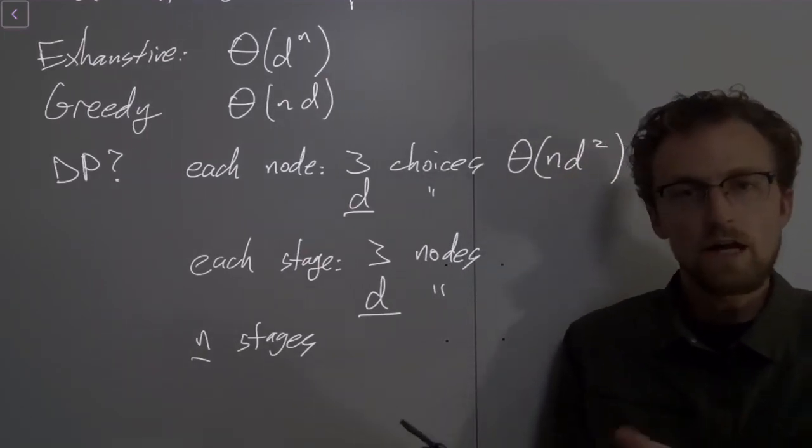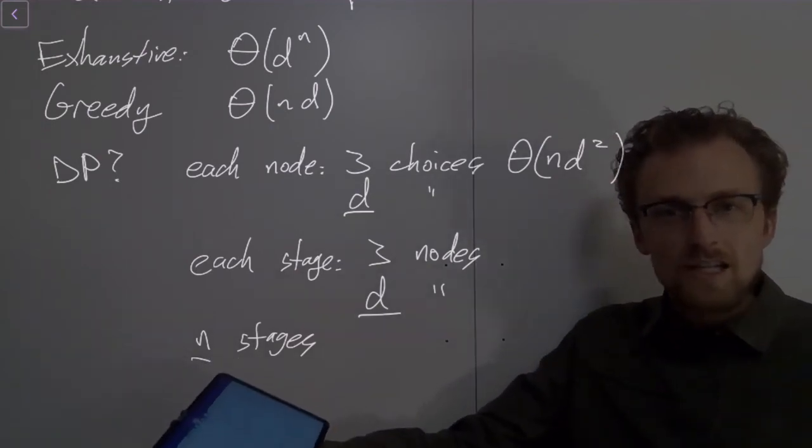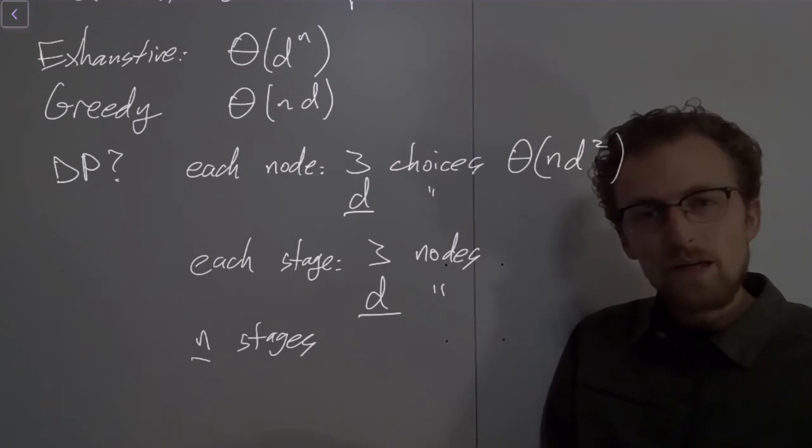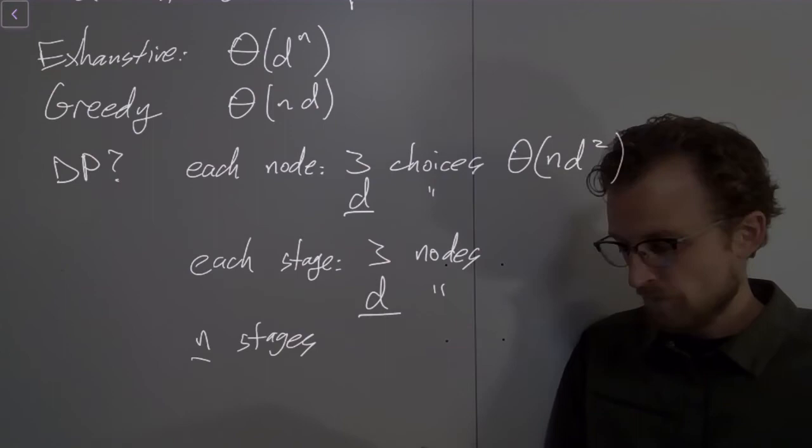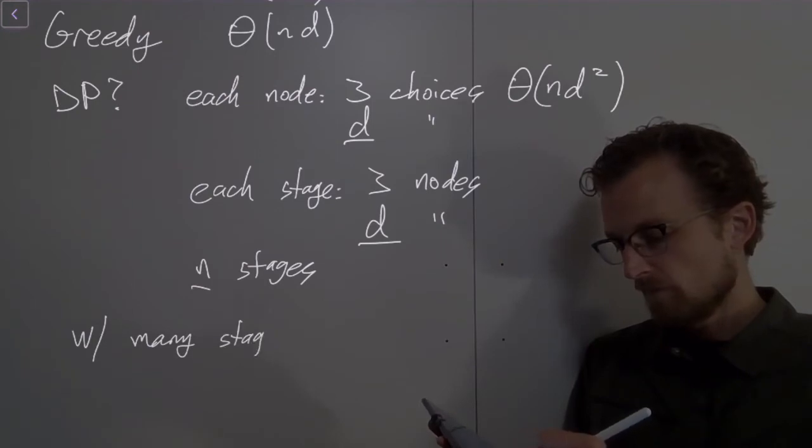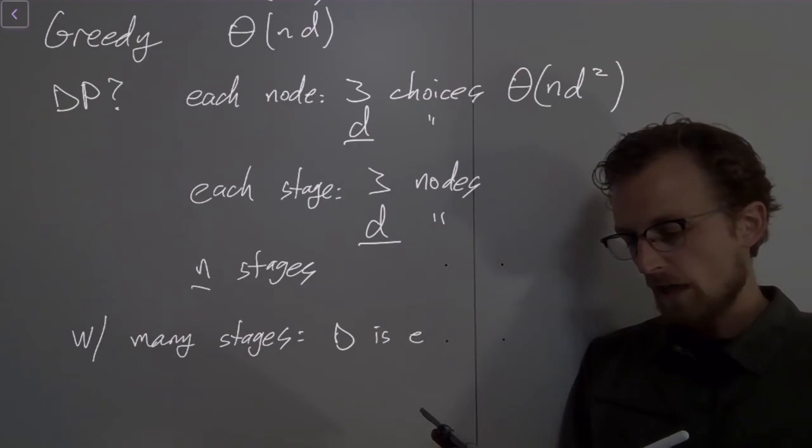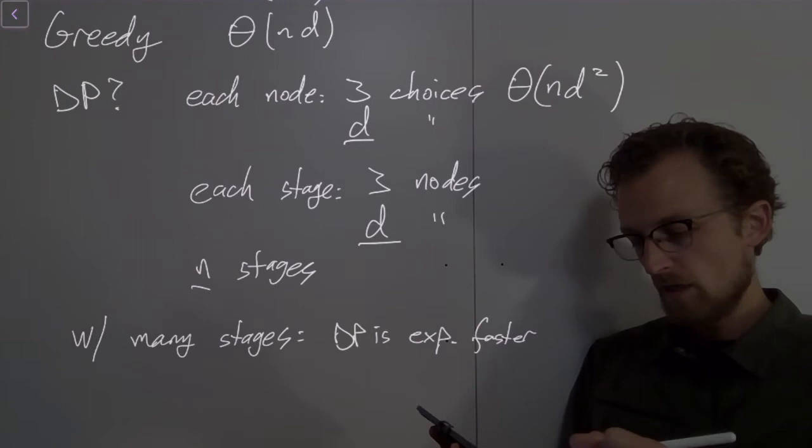So if the number of decisions is small and the number of stages is large, then the DP approach gives you an exponential speed up compared to the exhaustive approach. So with many stages, DP is exponentially faster than exhaustive.